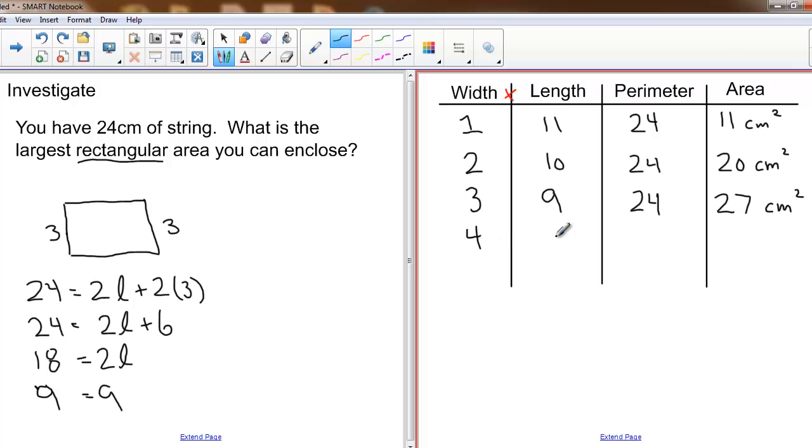Let's keep doing this. Let's follow the pattern. If I increase the width by one, I notice that my length is decreasing by one. The perimeter still 24. Eight times four is 32 centimeters squared. Still following this pattern, increase the width by one, decrease the length by one. Perimeter is still 24. Here my area would be five times seven or 35 centimeters squared.